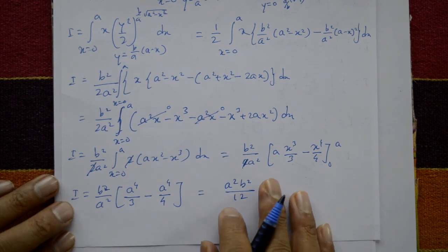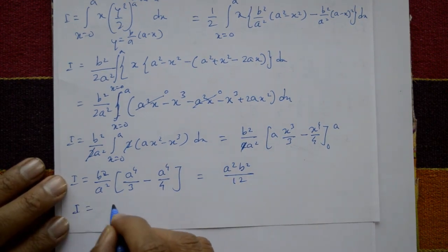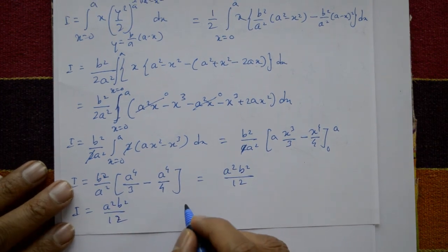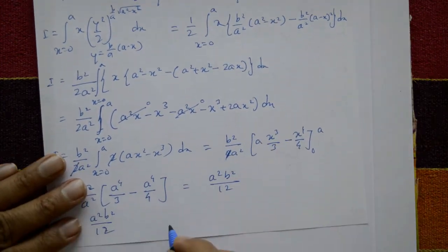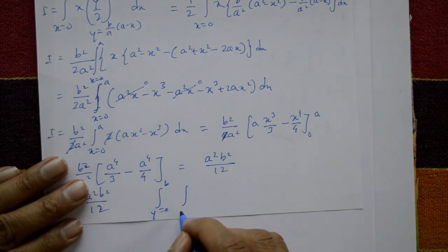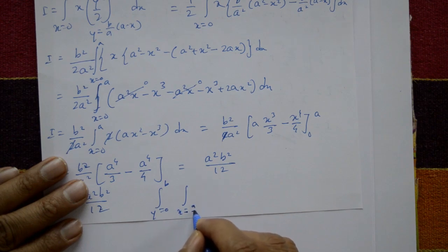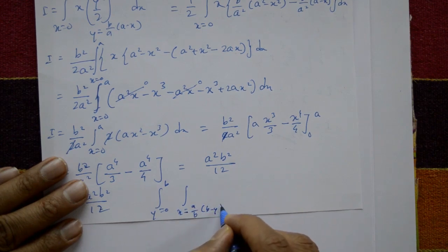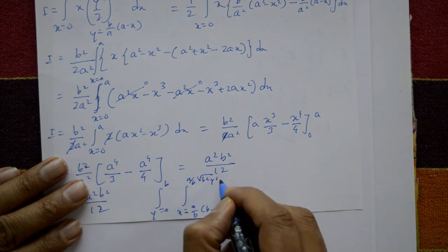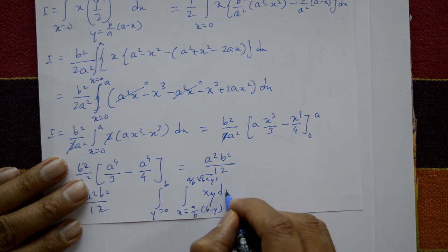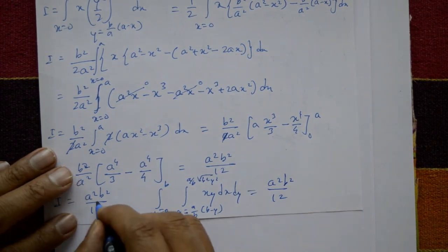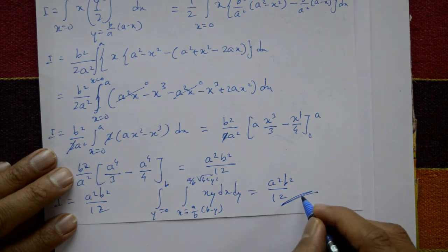Therefore I = a²b²/12. If we consider the alternative order, integrating ∫₀ᵇ ∫_{a/b·(b−y)}^{a/b·√(b²−y²)} xy dx dy, we get the same result a²b²/12. This is the required solution.